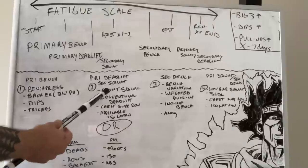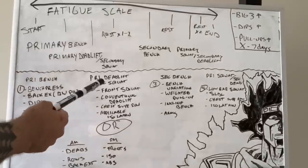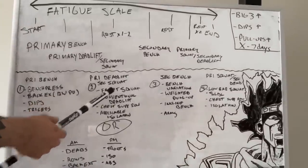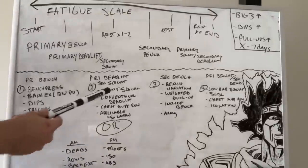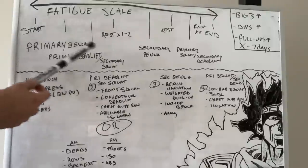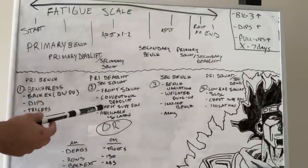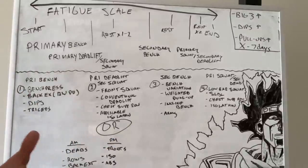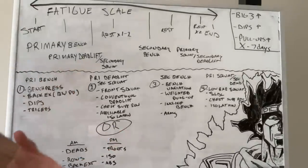Primary deadlift day is the most fatiguing deadlift day, where the muscles of your posterior chain are recruited the heaviest. That's going to be conventional deadlift for me. You could follow this up with something like a front squat, or if you squat low bar, a high bar squat. Personally, I'm alternating between a reverse SSB and a front squat, coming directly after conventional deadlifts. After that, I'm doing some sort of chest-supported row, and then your applicable isolation — hip adduction machine, hamstring curls, leg extensions — whatever addresses a weakness for you.